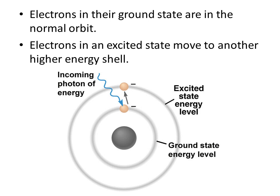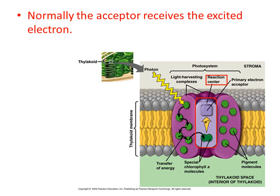Based on this image, the ground state is shell one and the excited state is shell two. As I add energy to this molecule, I excite the electron to move. Normally the acceptor receives the excited electron.